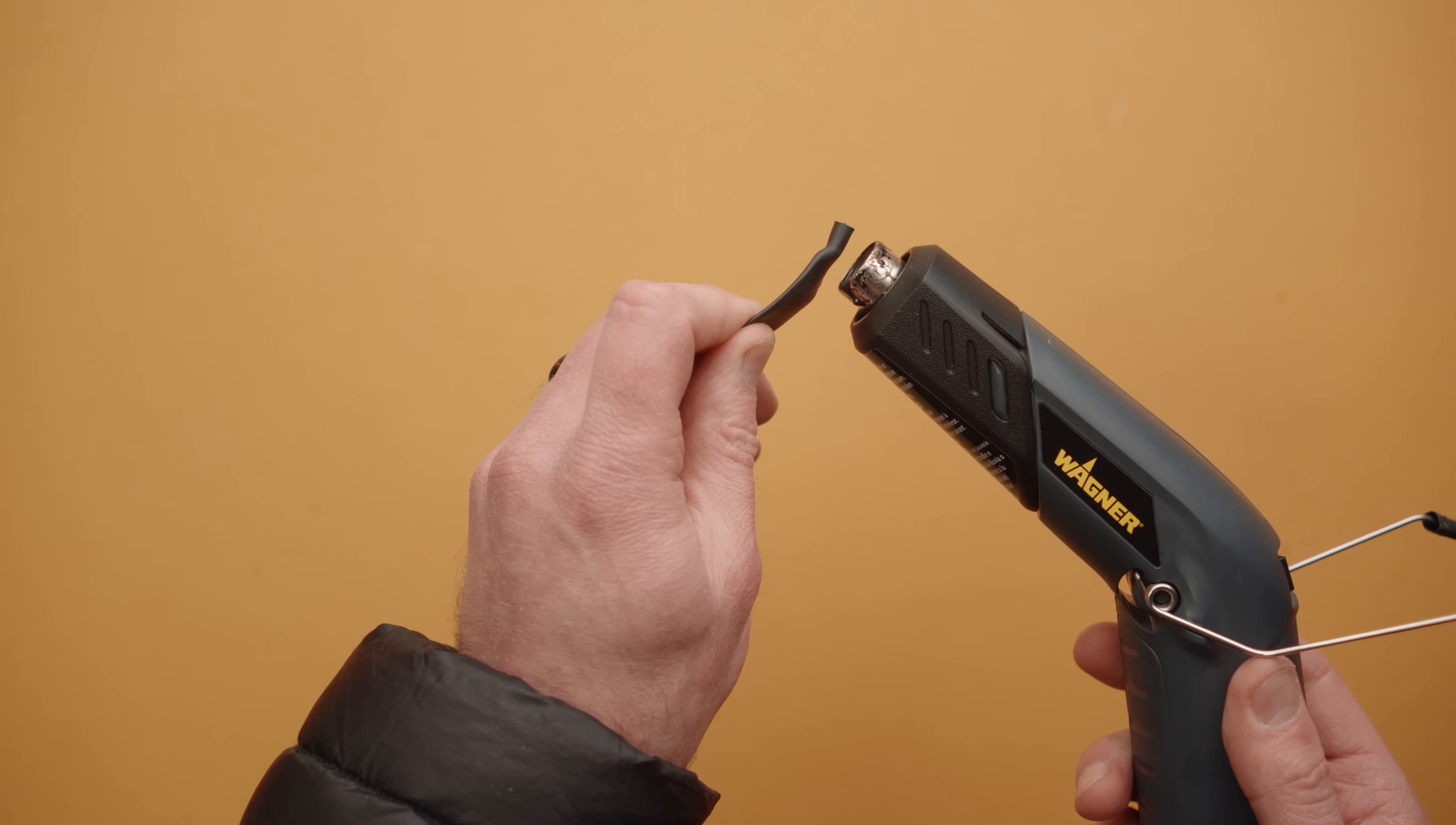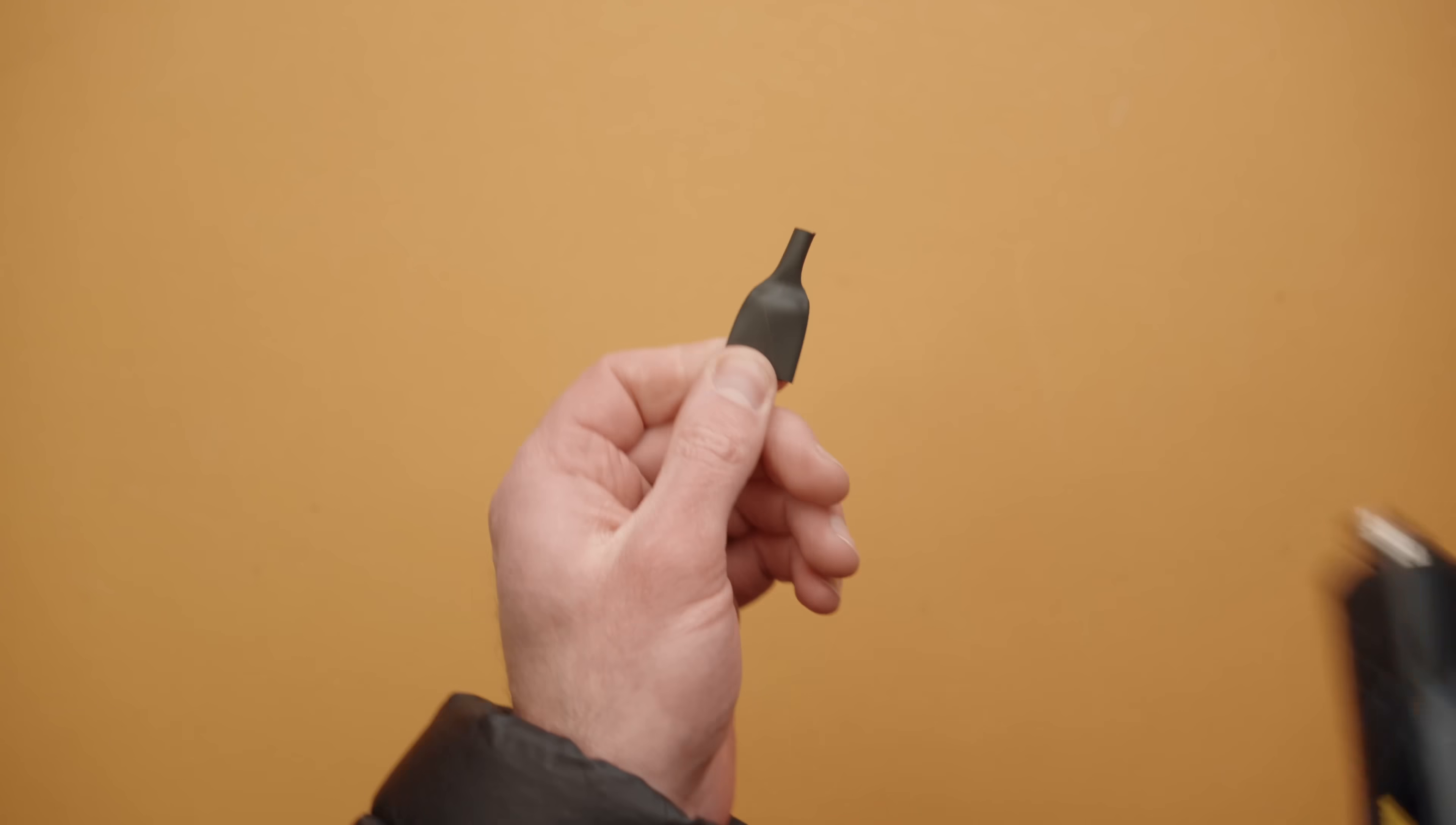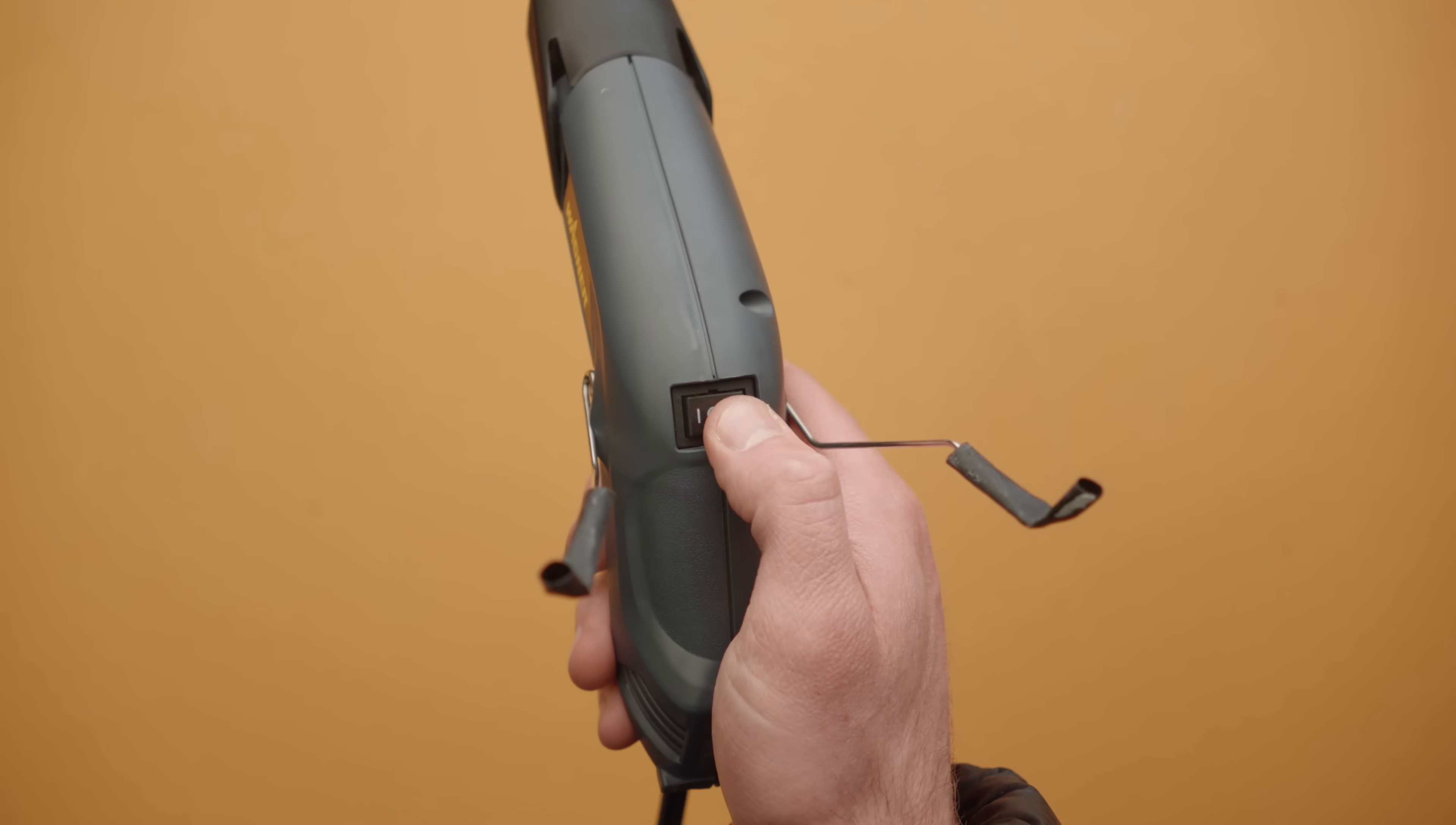I found three eighths to be the most useful size for the cables I was making. But again, if you're not making your cables from scratch, like adding a sleeve to an HDMI cable, you might want to go with something larger.